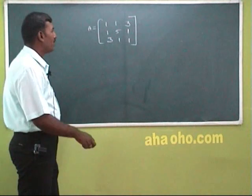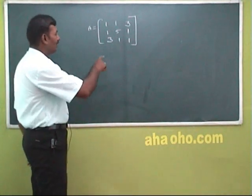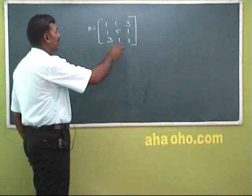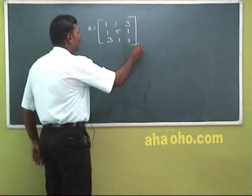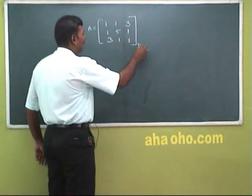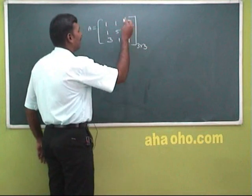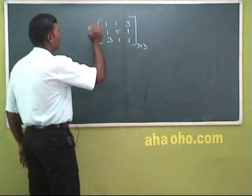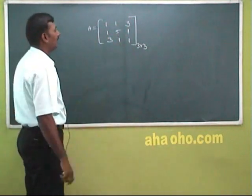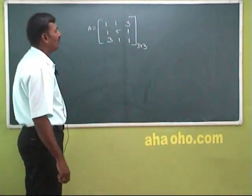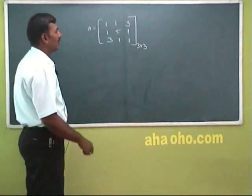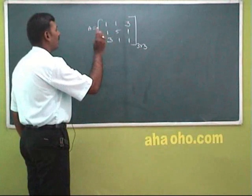If we look at a 2x2, we will find the problem in 3x3. We will find the eigenvalue and eigenvector. We will find the example. A is equal to the matrix: 1 1 3, 1 5 1, 3 1 1.